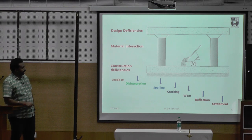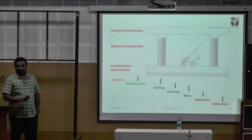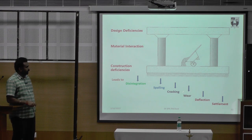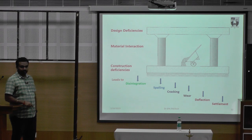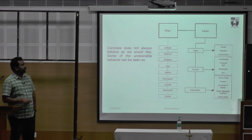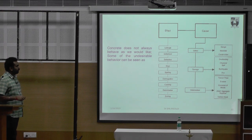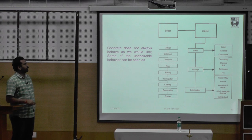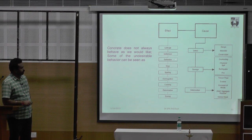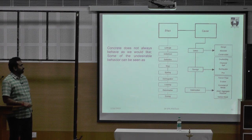All this leads to: first, the material will deteriorate in the structure. Your column will not collapse suddenly — only there is a possibility of disintegration, spalling, cracking, deflection, and finally settlement. The concrete does not always behave as we like. Some of the undesirable behaviors are: leakage, settlement, deflection, wear, spalling, disintegration, cracking, delamination, and scaling.